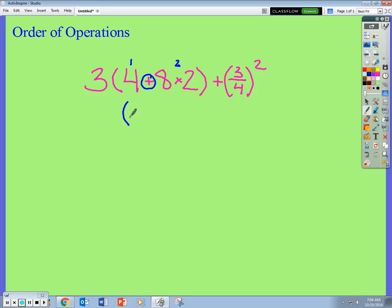So now I'm left inside the parenthesis still. 3 is on the outside there. 3 times 4 plus, this gave me 16, close parenthesis, plus, this is another term. I can now simplify 3 fourths squared.